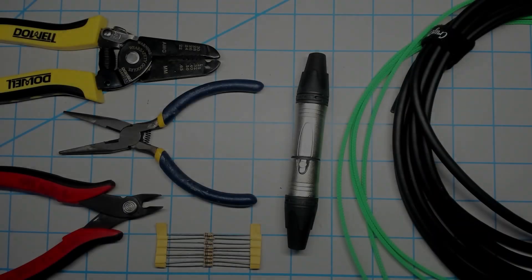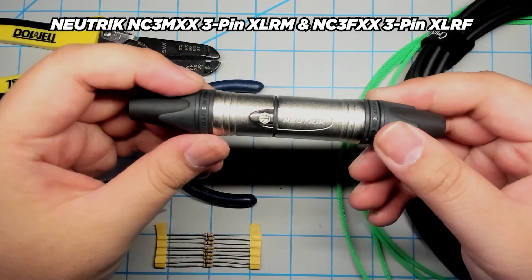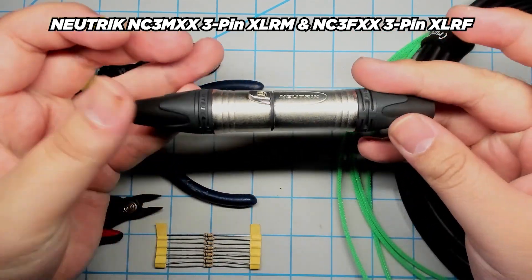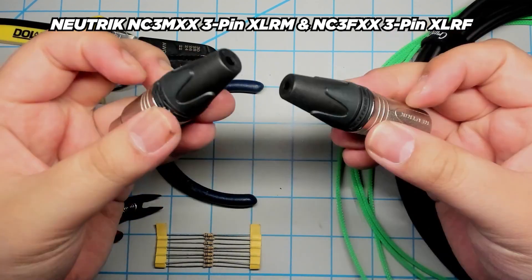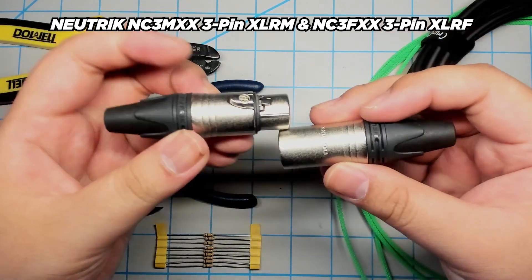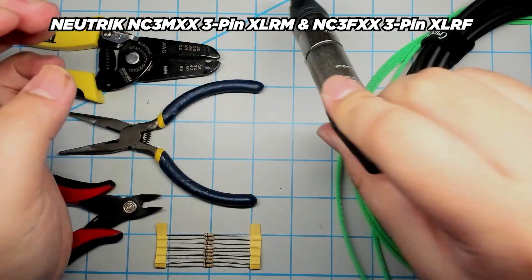Going into the parts I'm using for this cable, I've got the Neutrik NC3 MXX and NC3 FXX XLR connectors. After trying a wide variety of different XLR connectors, I found these to be a great value for building custom XLR cables.